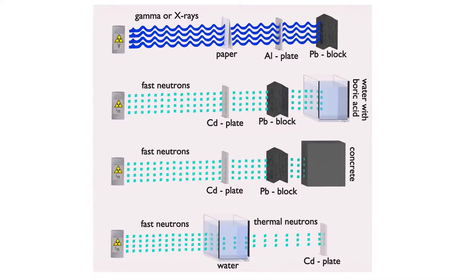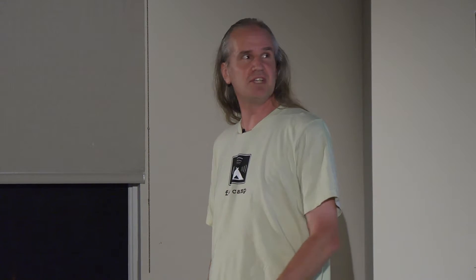Shielding neutrons is even more difficult. Fast neutrons coming out of the reactor need to be slowed down, typically using hydrogen-rich materials like water, paraffin, or polyethylene, and then absorbed in lead, concrete, or similar. If you look at research on subjecting devices to radiation, you find cases like a modern processor that was fired with gamma rays and failed — not because the processor itself failed, but because the PWM speed controller in the fan died, the fan stopped, and then the processor failed.